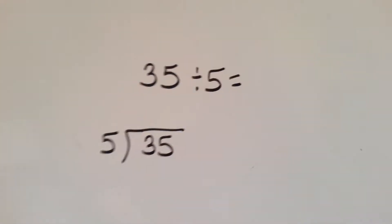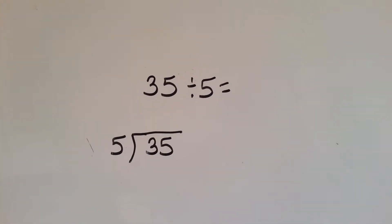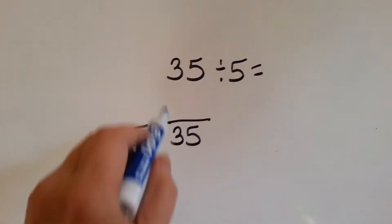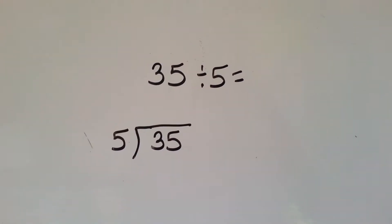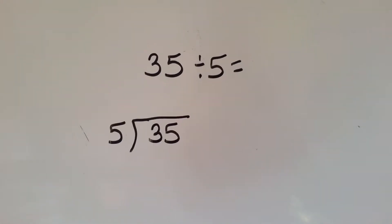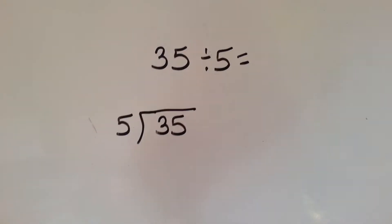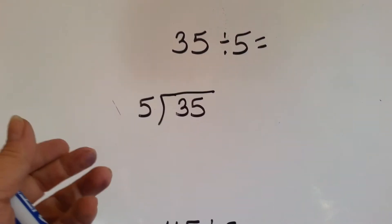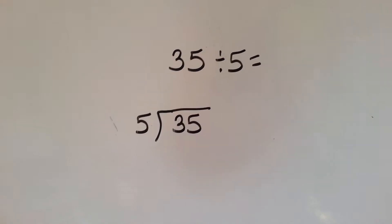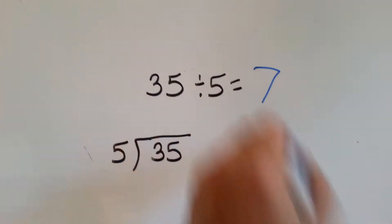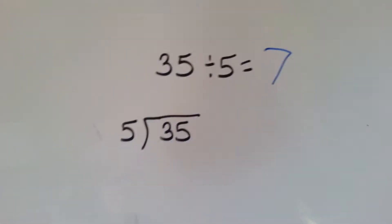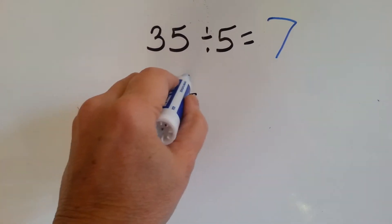How about this one? Knowing your times table is going to help you go really fast doing this. What times 5 is 35? Now, we can count by 5's and do it that way also. Let's try that. 5, 10, 15, 20, 25, 30, 35. 7. 7 fingers. So, 5 goes into 35 seven times.